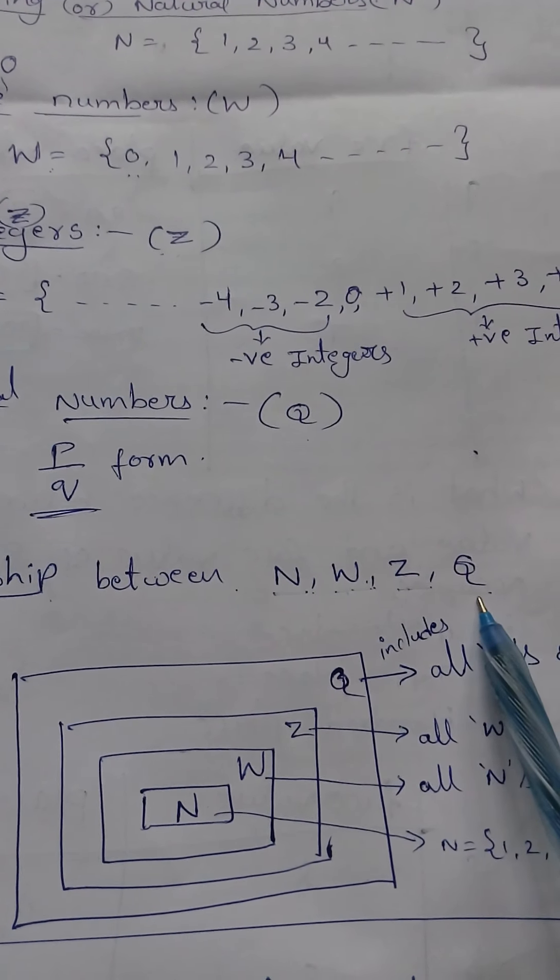What is N? Natural numbers. W, whole numbers. Z, integers. Q, rational numbers.